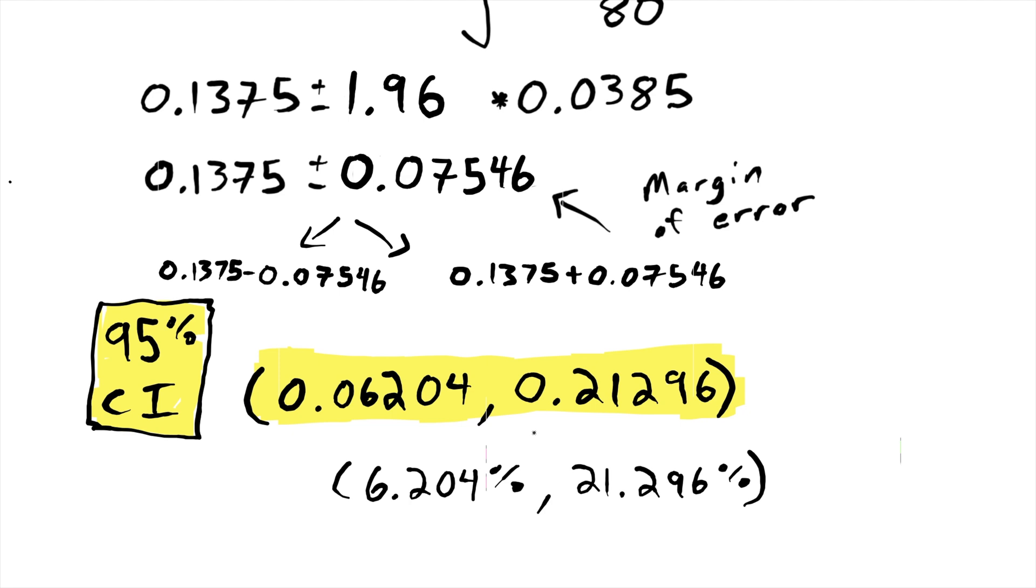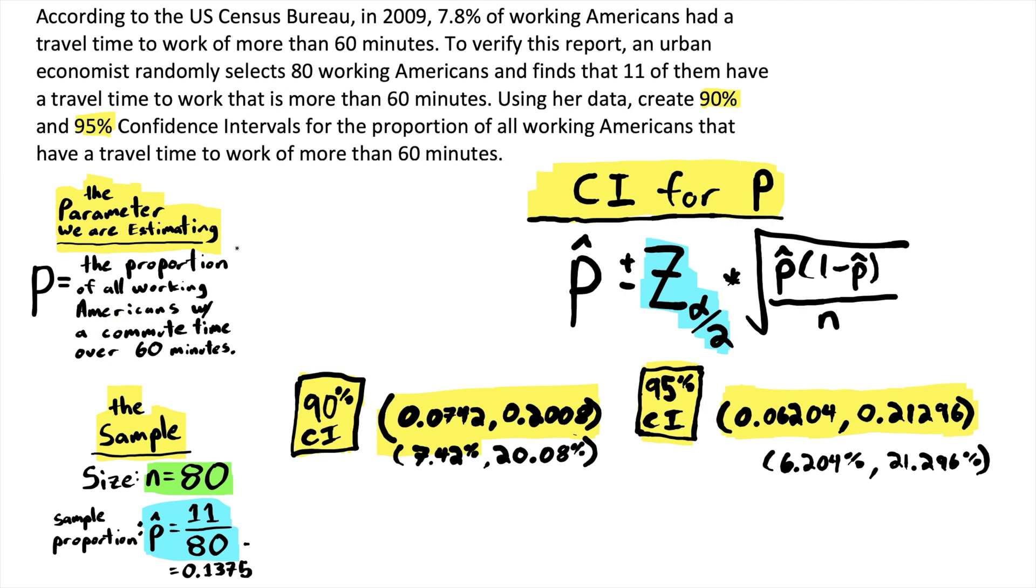So now let's summarize. So we were trying to estimate the proportion of all working Americans that have a commute time of over 60 minutes, and it's hard to know. So a sample was taken, and that sample was used to create two confidence intervals with different levels of confidence. And if you compare these two intervals, they're both centered on our sample proportion. But our 95% confidence interval is wider. If I use the metaphor that the parameter is a fish and the confidence intervals are nets, if we want to be more sure that we catch the fish, we use a wider net. As your level of confidence increases, your confidence interval becomes wider.